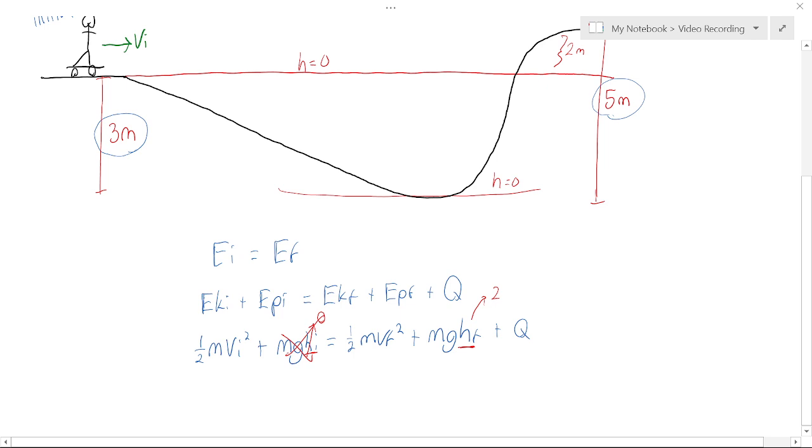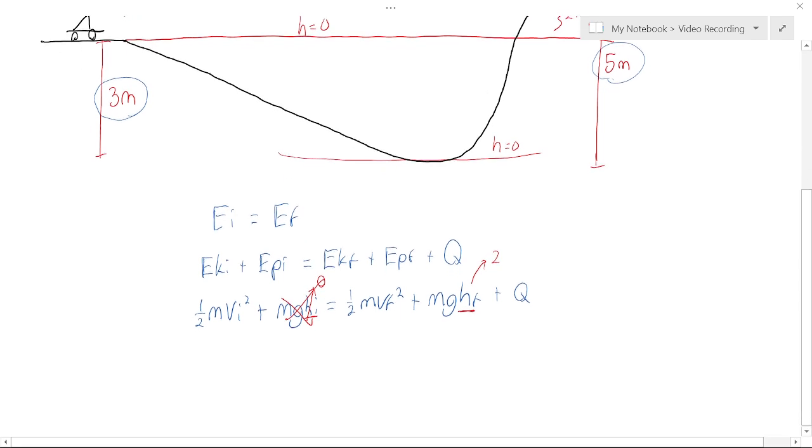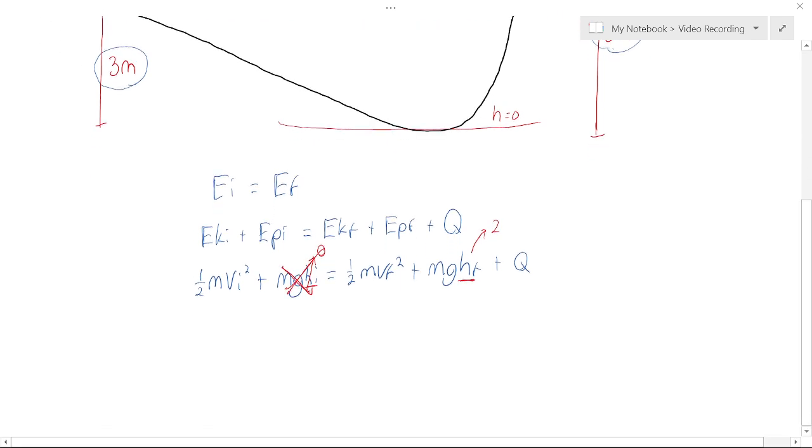And if this is zero, we can cancel this whole term because mg times zero is zero. This is helpful because we'll have to do less algebra to solve the problem if this whole term goes away.